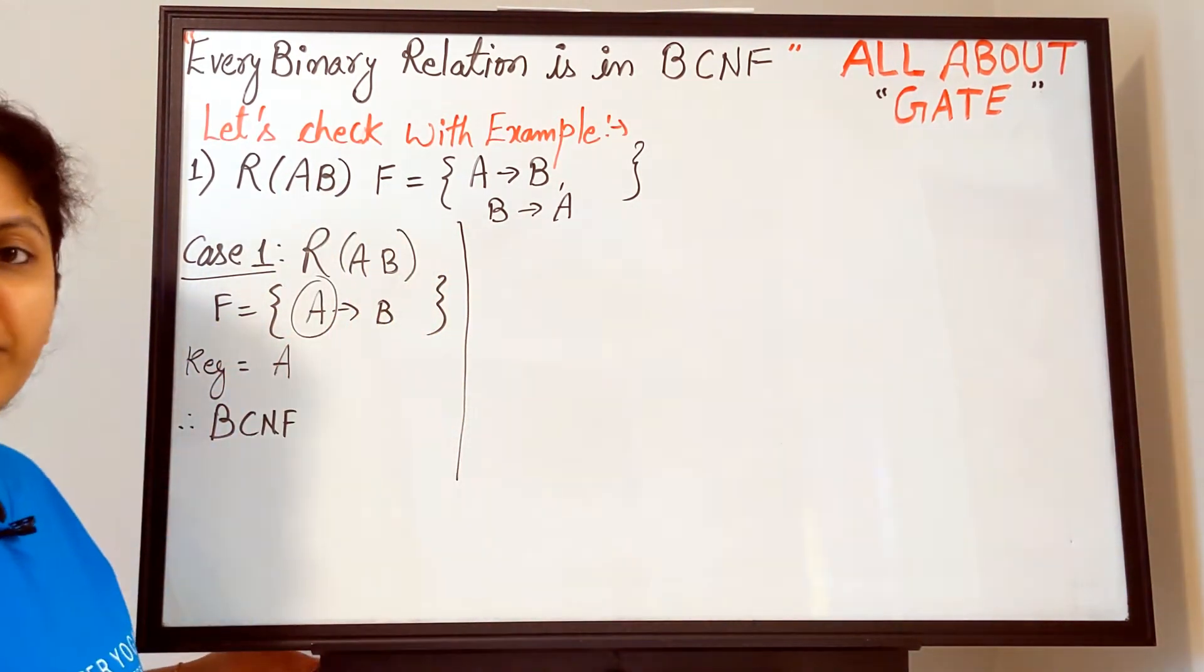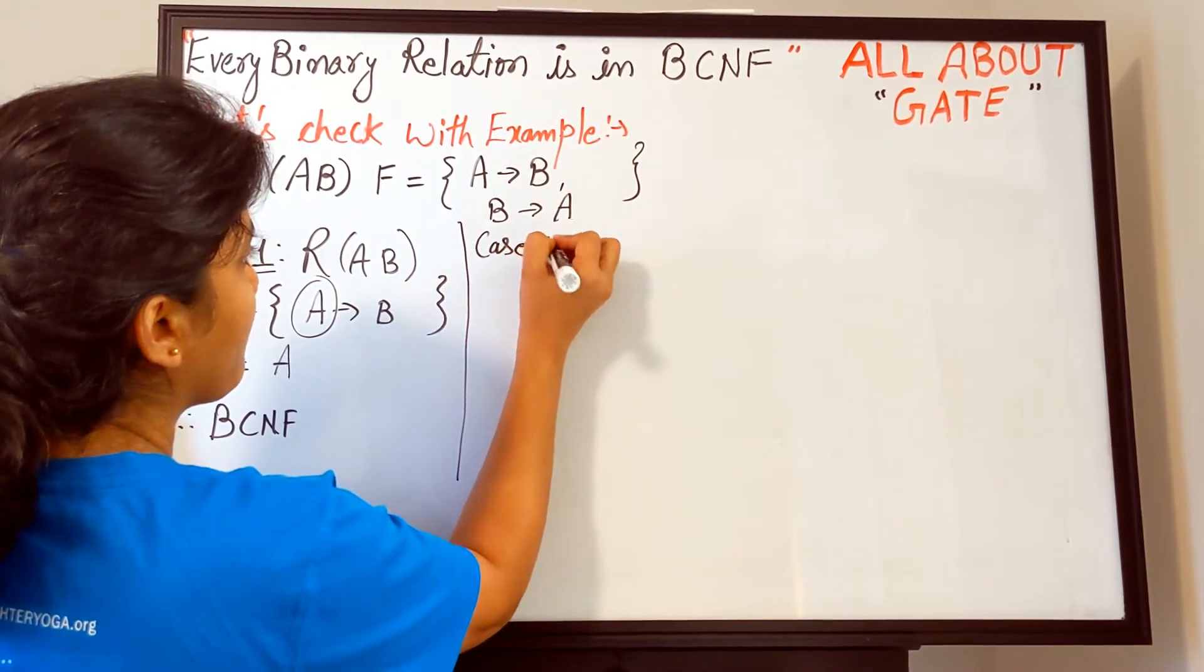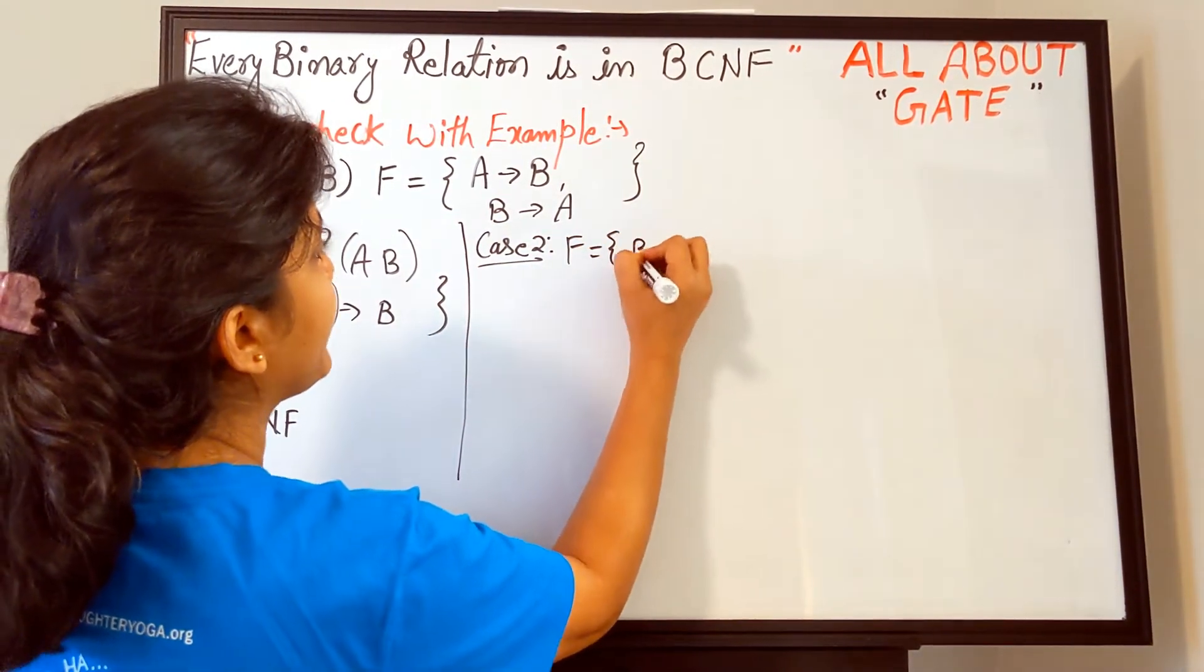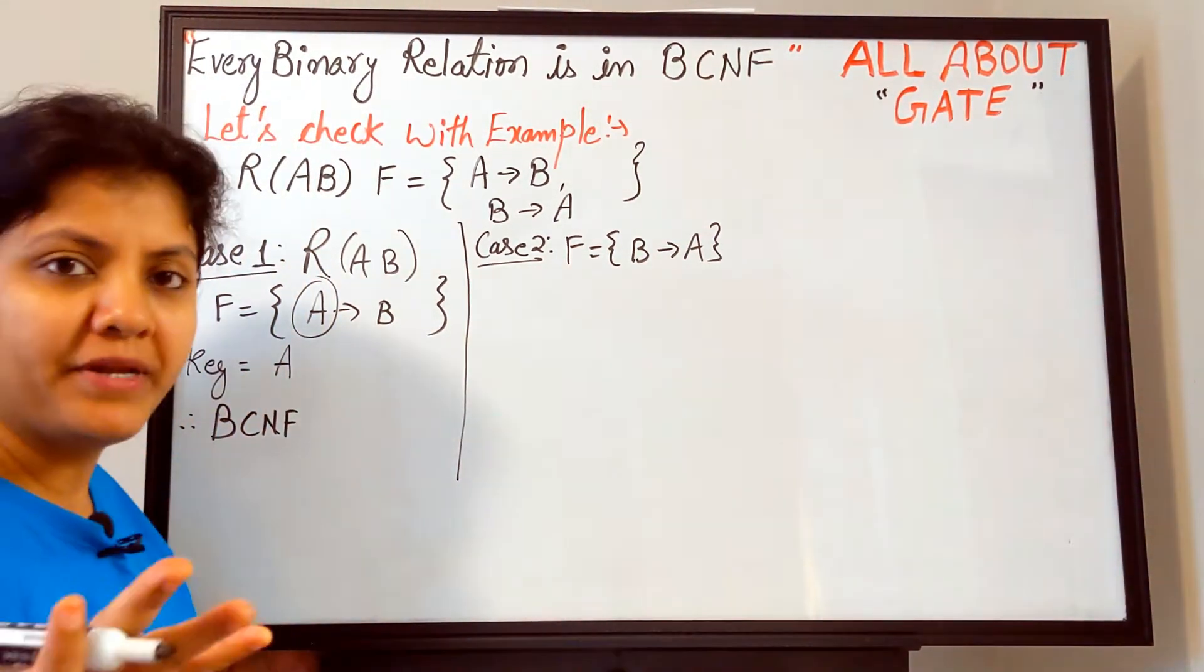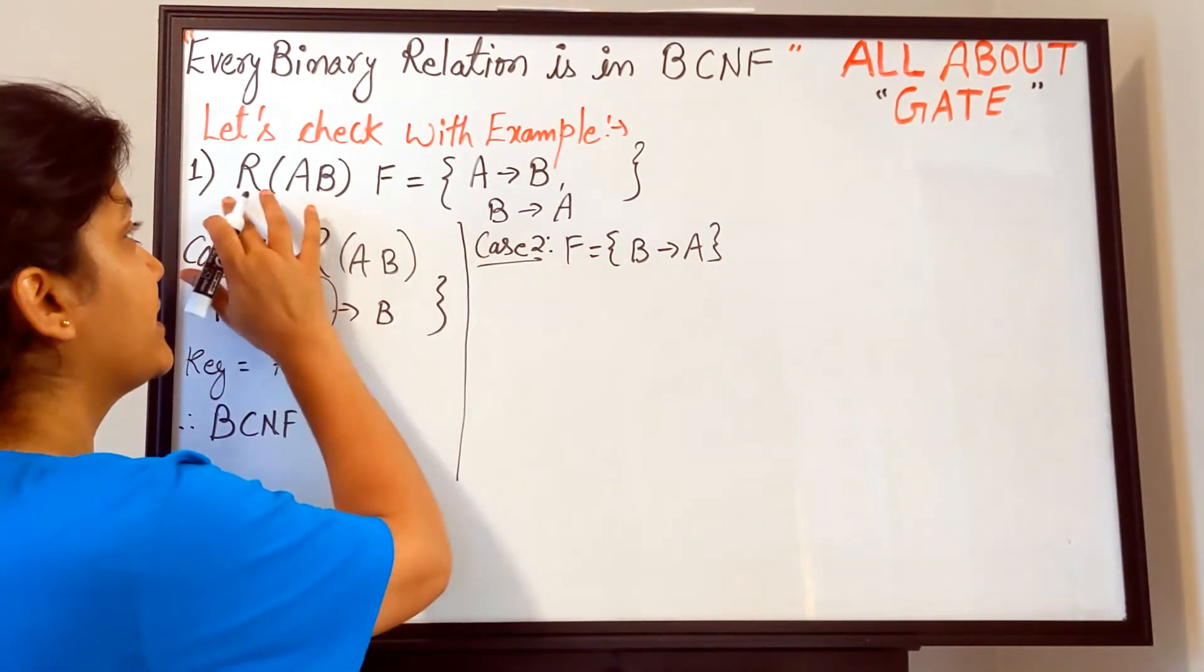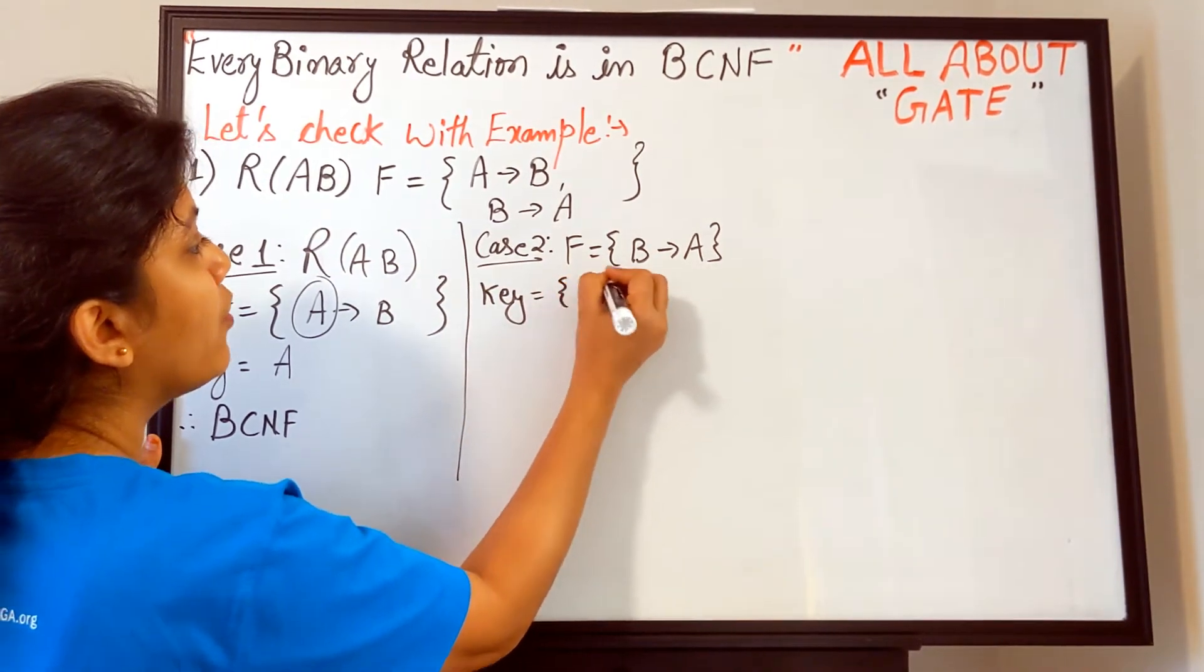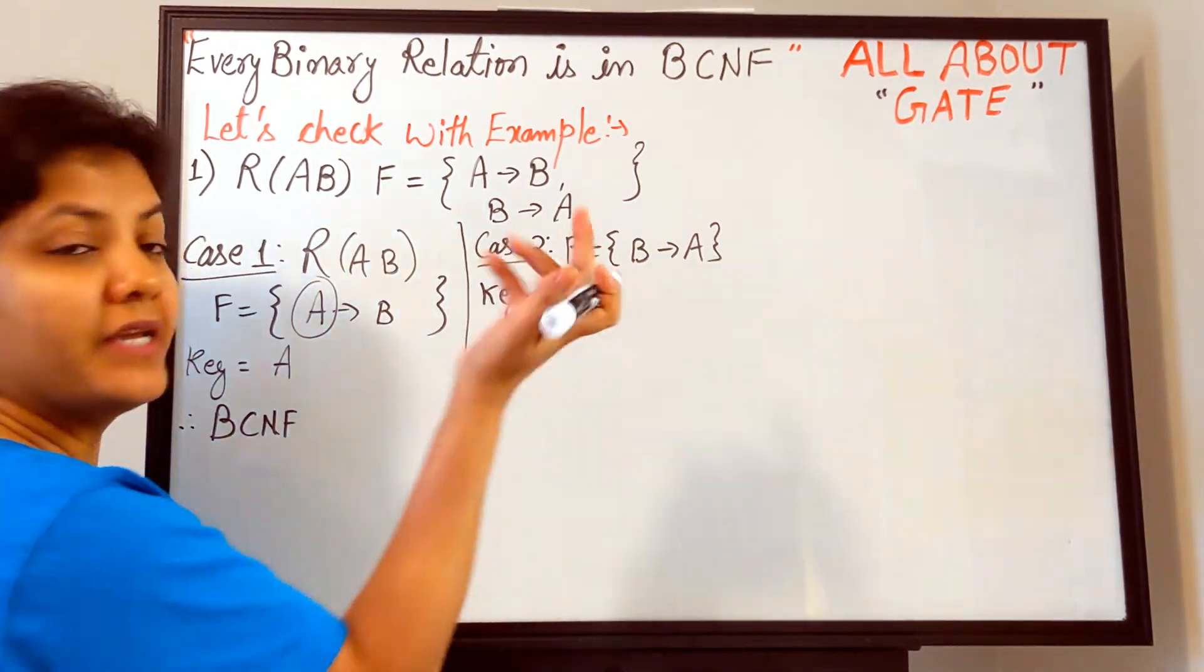Case one has shown that it is in BCNF. If you take A to B, it is going to be in BCNF. Now take up case number two. Again, R is as it is and I am just writing the functional dependency. This time I am taking B to A. I hope I don't even need to repeat it—you all understand. When you have B to A as a functional dependency in relation R with A,B, what becomes the key? The key is nothing but B.